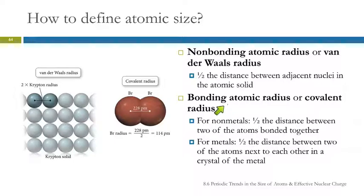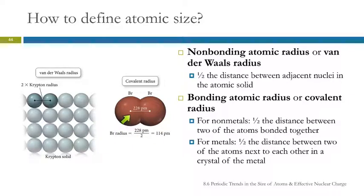We can also look at a bonding atomic radius, also known as a covalent radius. Here we have two bromine atoms covalently bonded together to form a bromine molecule. We can look at the distance between the nuclei in this bond and divide that by two. So for non-metals, it's going to be half the distance between two of the atoms bonded together.